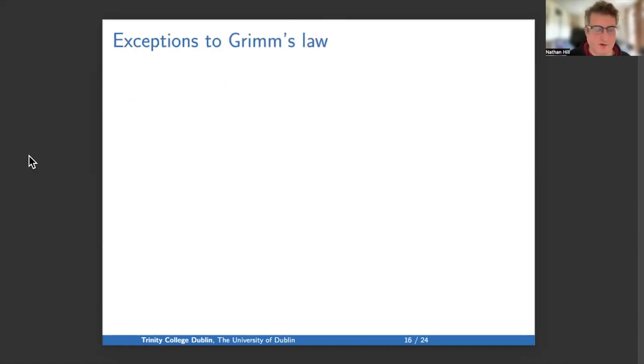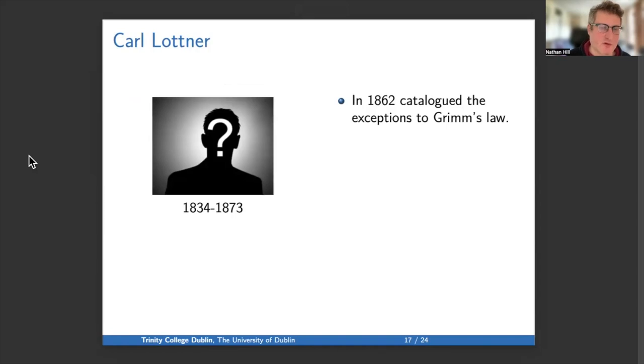But there are some exceptions to Grimm's Law, and that's what we'll look at next. So Karl Lottner, 1834 to 1873, who I so far have been unable to find a picture of - and if you have one please let me know and send it to me - in an article in 1862 he catalogued all of the known exceptions to Grimm's Law. And one point I want to make in this presentation is what a service to science that is. In the rat race of academia there can be too much emphasis on trying to produce new results or use new methods. Well, here is a guy who just systematically collected evidence in a tidy way, and that is not an activity that gets a lot of glory but is enormously beneficial to the progress of science.